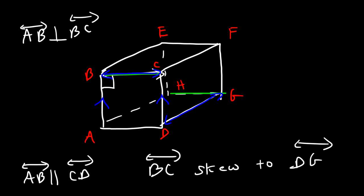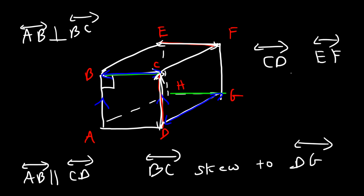What's the relationship between EF and CD? We can't draw a plane that contains both of those lines, so those are skew lines — non-coplanar lines that will never intersect. So CD and EF are skew lines.